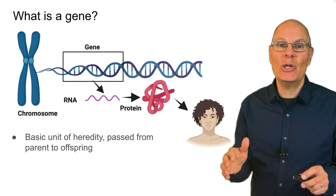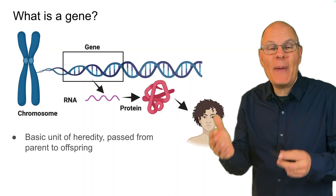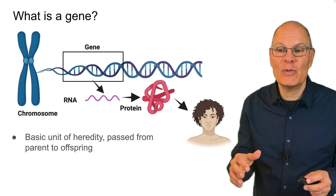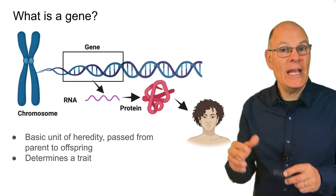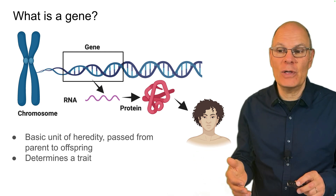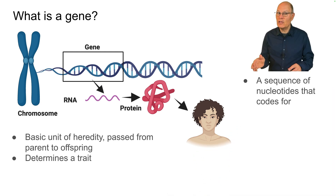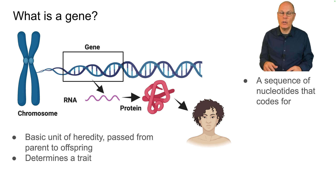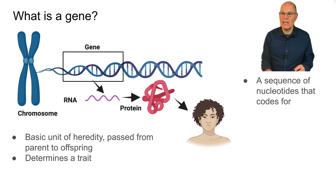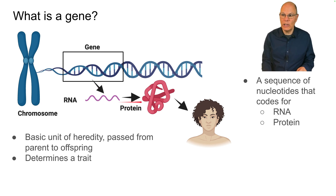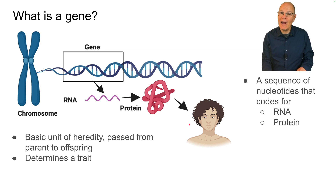Genes are the basic unit of heredity. They are what gets passed from parents to offspring, and they determine traits or characteristics. From a molecular genetics perspective, you can think of genes as a sequence of DNA nucleotides that code for RNA, and ultimately code for protein. Those proteins ultimately determine the characteristics of the organism.